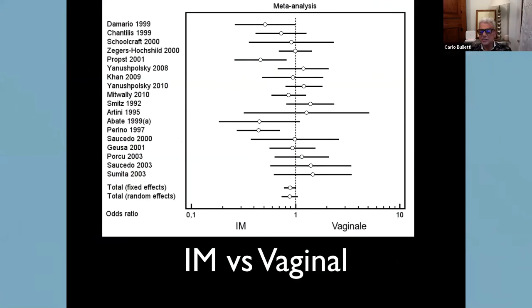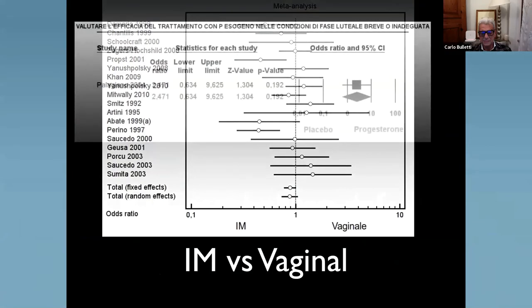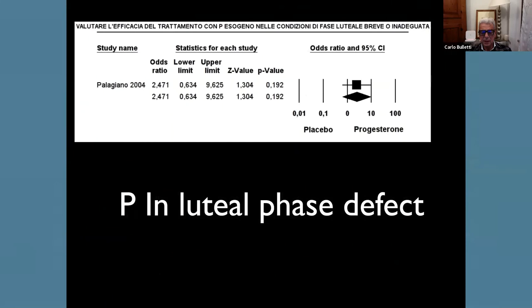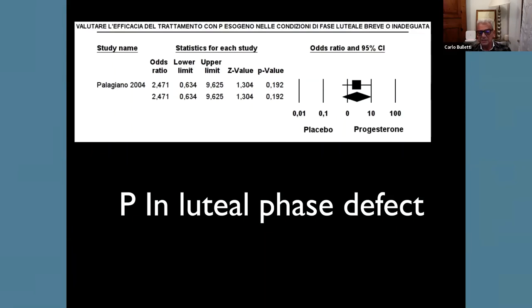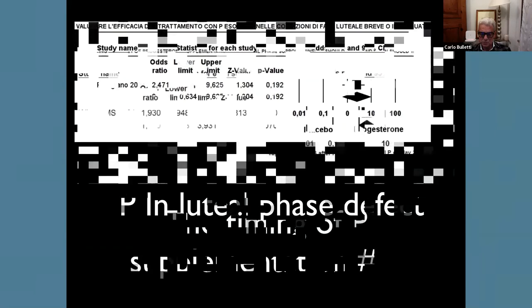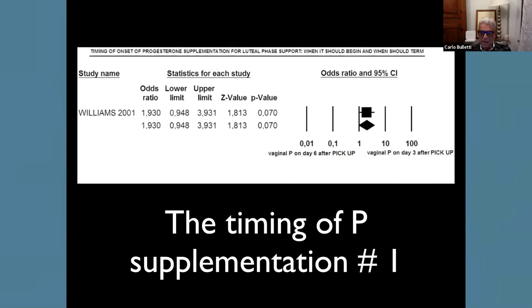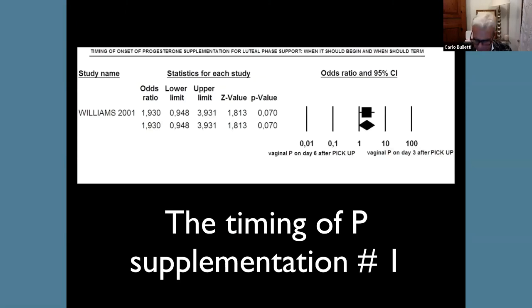Intramuscular administration versus vaginal administration: there is no difference — equally efficient. The supplementation of vaginal progesterone on day six versus day three after pickup doesn't show a significant difference, but it seems very close that there is an advantage of vaginal progesterone three days after the pickup.